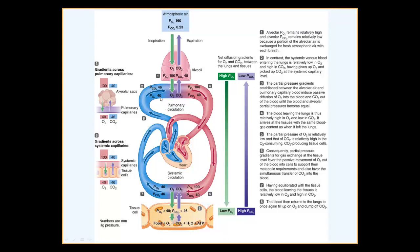Diffusion will occur: the higher partial pressure of carbon dioxide in the blood (46) compared to the alveoli (40) drives CO2 outward. The opposite is true for oxygen — partial pressure of O2 in the blood is 40 while in the alveoli it's about 100–105, so oxygen diffuses inward across the respiratory membrane, which is formed by type 1 alveolar cells, interstitial tissue, and the endothelial lining of the capillaries.